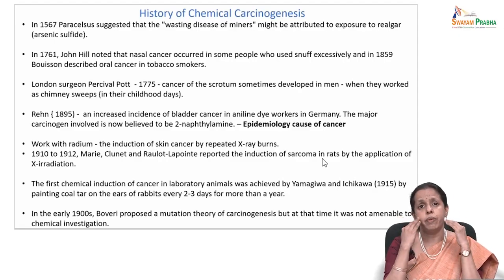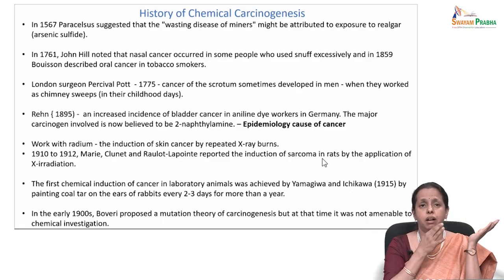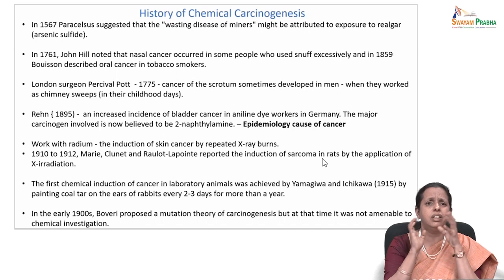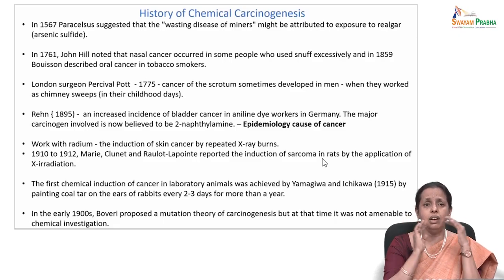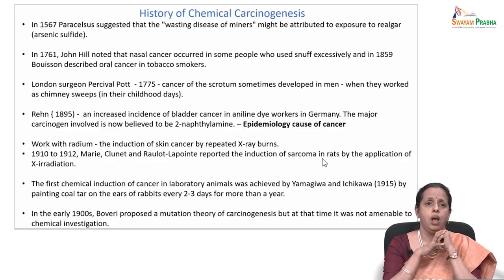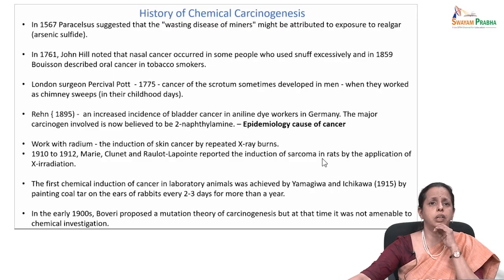Now we will talk about the cancer epidemic — for example, lung cancer is the epidemic in current Asia. You have asbestos linings causing an increase in cancer incidence in countries where asbestos use is greater. Along with the history, the incidence of skin cancer from repeated X-ray burns was reported. Some groups also went on to show induction of sarcomas and carcinomas by X-ray radiation.